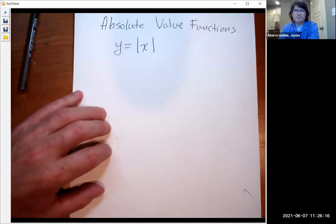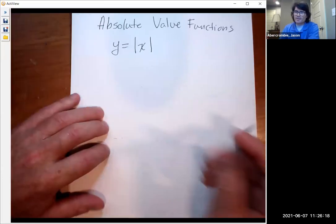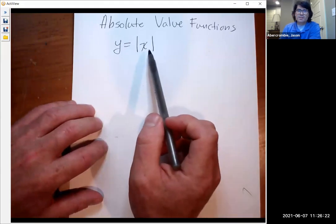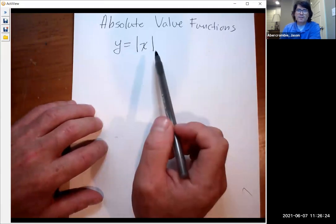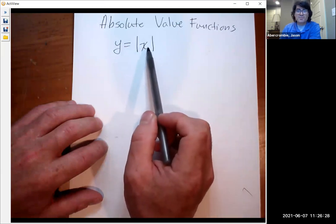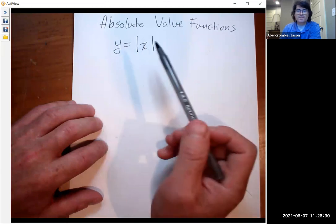This is something that many people have seen before, but they may not really know exactly what it is. The absolute value function is simply a question that says, how far is whatever is in these bars from zero? What is the magnitude?